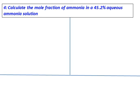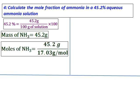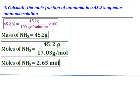Calculate the mole fraction of ammonia in a 45.2% aqueous ammonia solution. When mole fraction is asked, you need the moles of ammonia and moles of water, and once you have both, you can calculate the mole fraction. 45.2% ammonia means 45.2 grams of ammonia in 100 grams of solution, so mass of ammonia is 45.2 grams. Using the molar mass, moles of ammonia comes to 2.65.